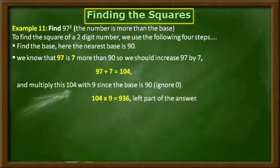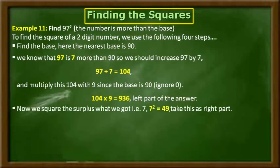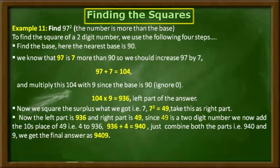Moving to step number three: we have to square the surplus we got. The surplus is 7, and by squaring 7 we get 49 as the answer, and we take this as the right part of the answer. Now if we observe, the left part is 936 and the right part is 49.